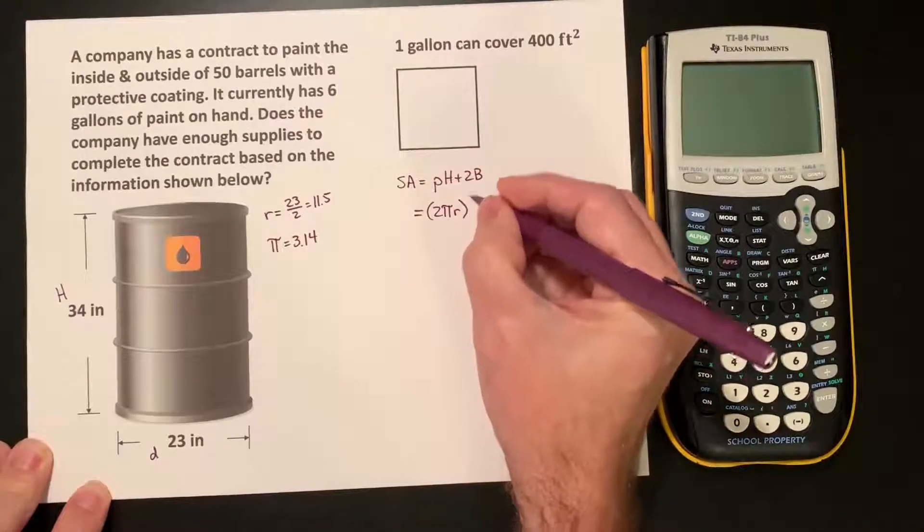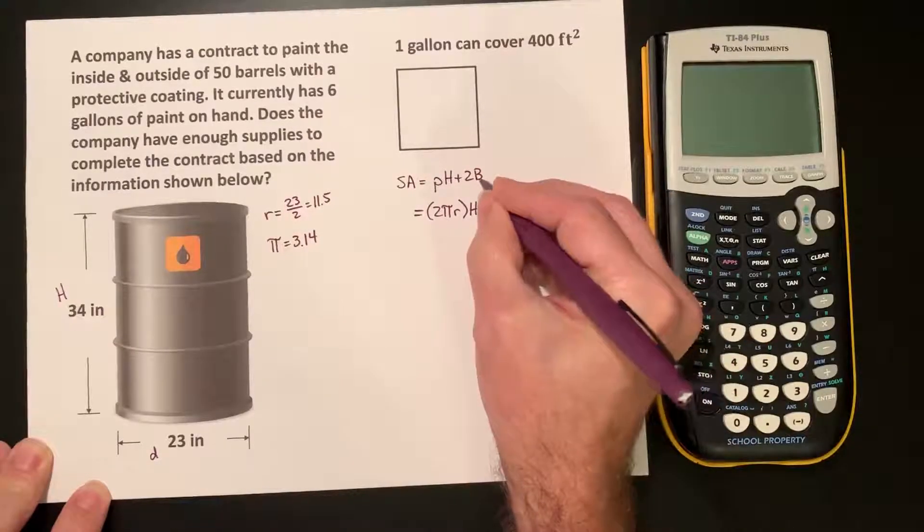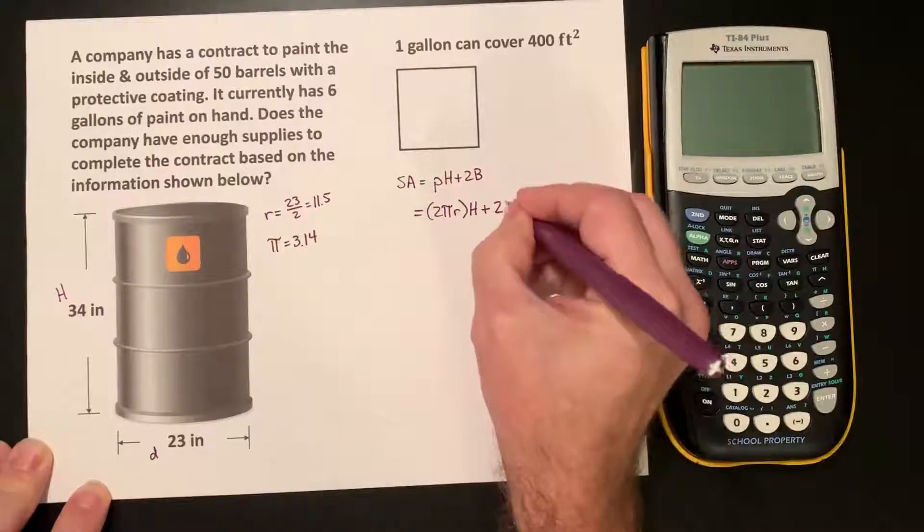H is the height, and then 2 times capital B represents the area of the base, and since it's a circle, that's going to be πr².